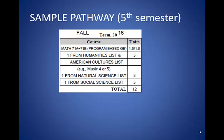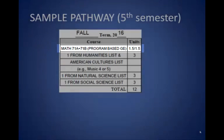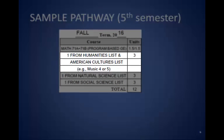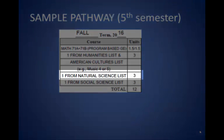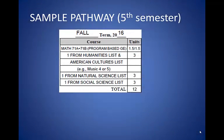This is the continuation of the sample pathway for the fifth semester of the 2.5-year plan. For the fall semester, you can take the listed courses for a total of 12 units. In this last semester, you are taking all GE classes: Math 71A plus Math 71B are the program-based GE requirements; one course that fulfills both the Humanities and American Cultures requirement, for example Music 4 or 5; one course from the Natural Science list; and one course from the Social and Behavioral Science list. All the courses are listed in order to ensure that you complete all of your ASGE and major courses along with a minimum of 60 degree-applicable units for the AS in Automotive Electronics Technology.